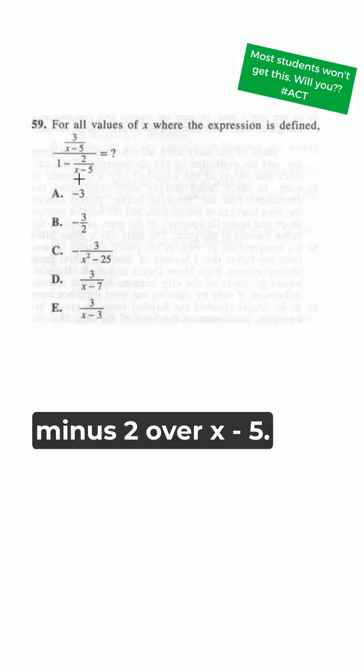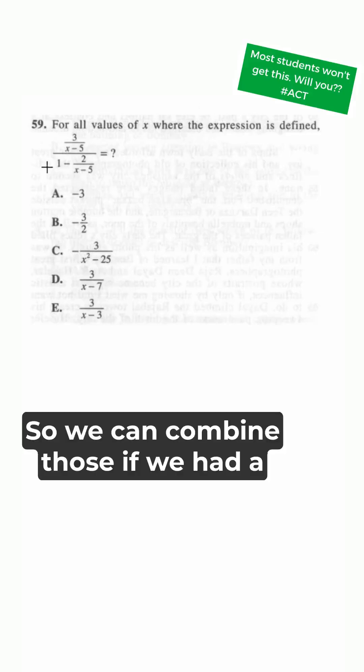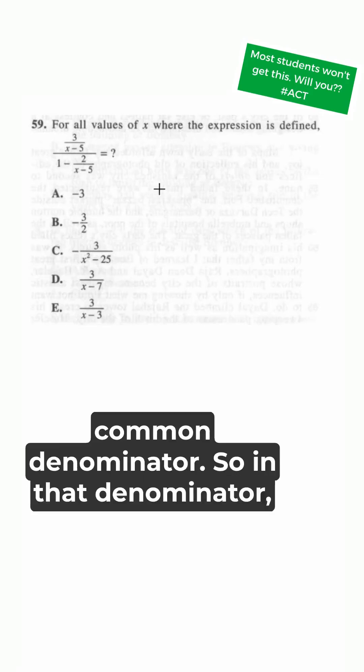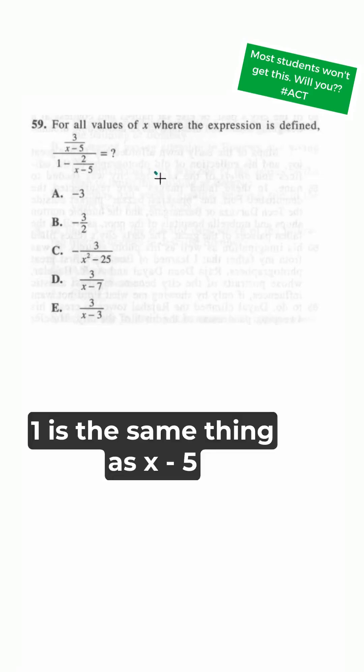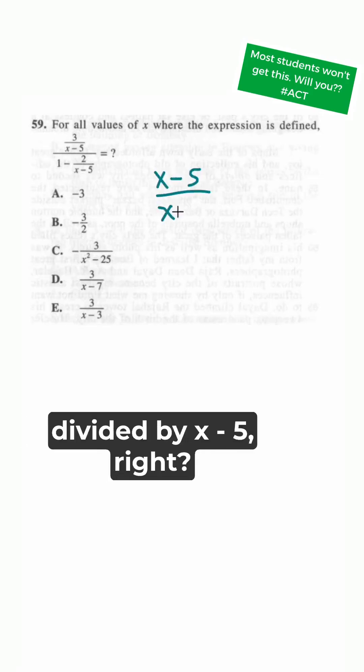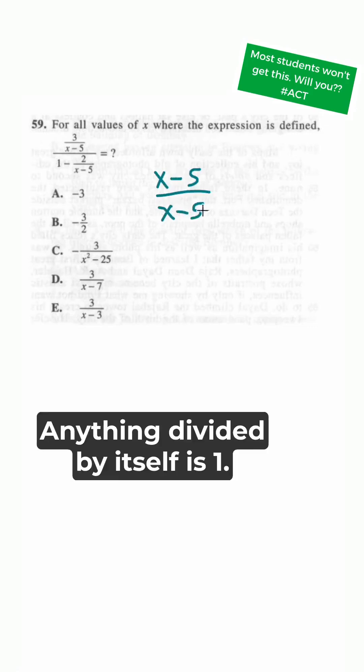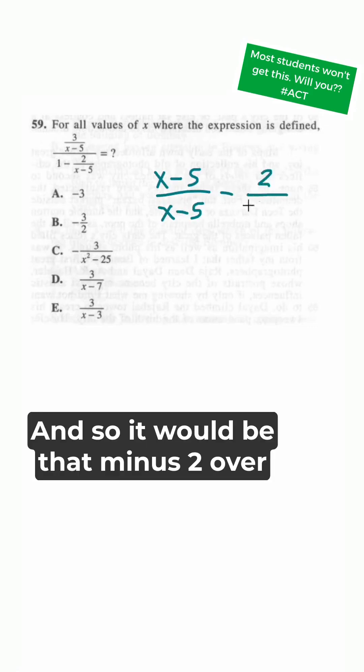We've got in the denominator 1 minus 2 over x minus 5, so we can combine those if we had a common denominator. In that denominator, 1 is the same thing as x minus 5 divided by x minus 5, right? Anything divided by itself is 1, and so it would be that minus 2 over x minus 5.